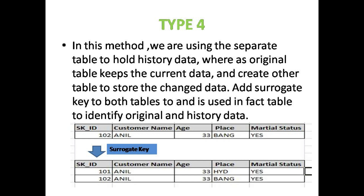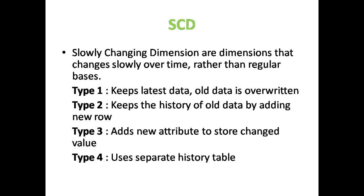We can get the data using the surrogate key SK_ID. Here 102 corresponds to customer Anil, age 33, place Bangalore, marital status S - and the same data is held in the main table as 102, Anil, 33, Bangalore, S. Surrogate key 101 indicates old data, where the place is Hyderabad. This is Type 4. These are the four types of Slowly Changing Dimensions - they are very important.